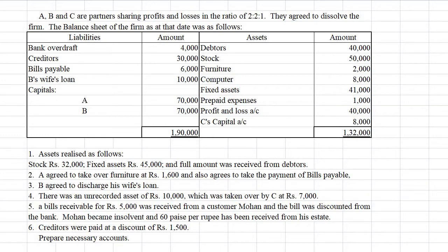Assets realized: stock rupees 32,000, fixed assets 45,000, and full amount recovered from debtors. A agreed to take over furniture for rupees 1,600 and also agrees to pay bills payable. B agreed to discharge his wife's loan. There was an unrecorded asset of rupees 10,000 taken over by C at rupees 7,000. A bills receivable for rupees 5,000 was received from a customer who then became insolvent, able to pay only 60 paise per rupee.